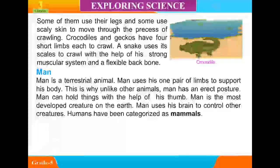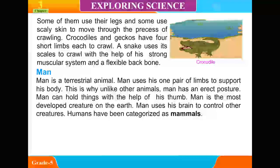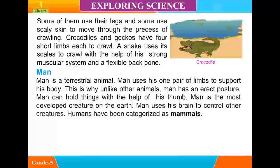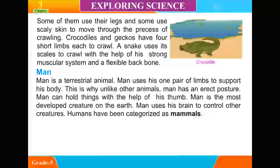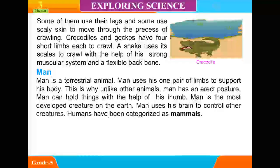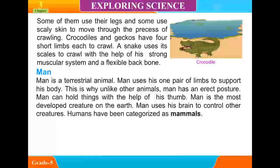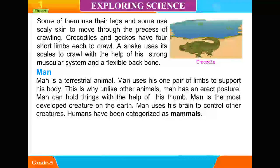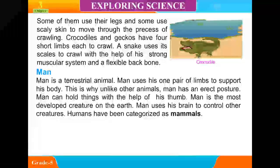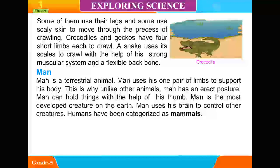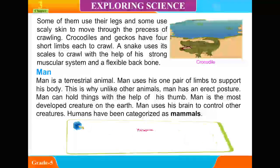Man: Man is a terrestrial animal. Man uses one pair of limbs to support his body, which is why, unlike other animals, man has an erect posture. Man can hold things with the help of his hands. Man is the most developed creature on the earth and uses his brain to control other creatures. Humans have been categorized as mammals.